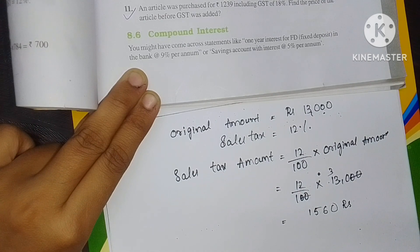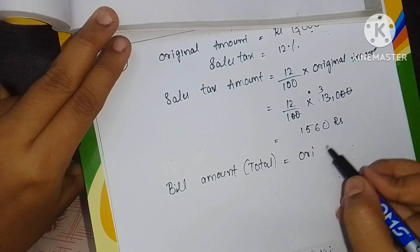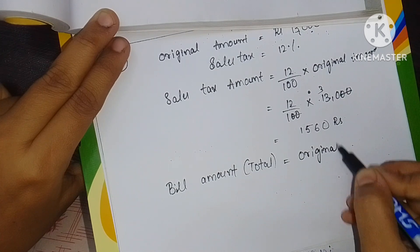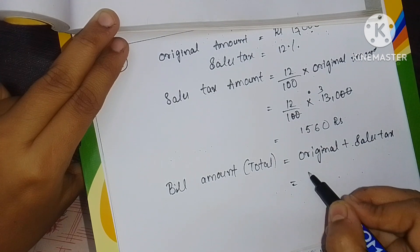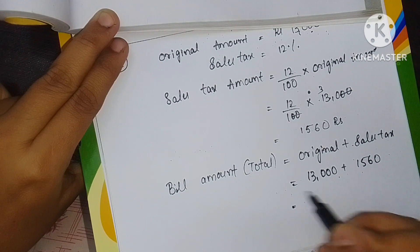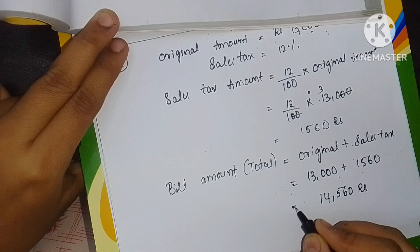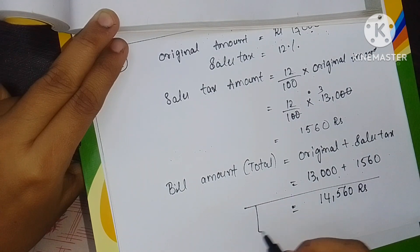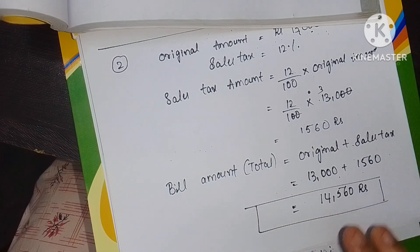The total bill amount that Vinod has to pay is the original amount plus the sales tax amount: 13000 plus 1560, which equals rupees 14560. This is the total bill amount Vinod has to pay for the product including the sales tax.